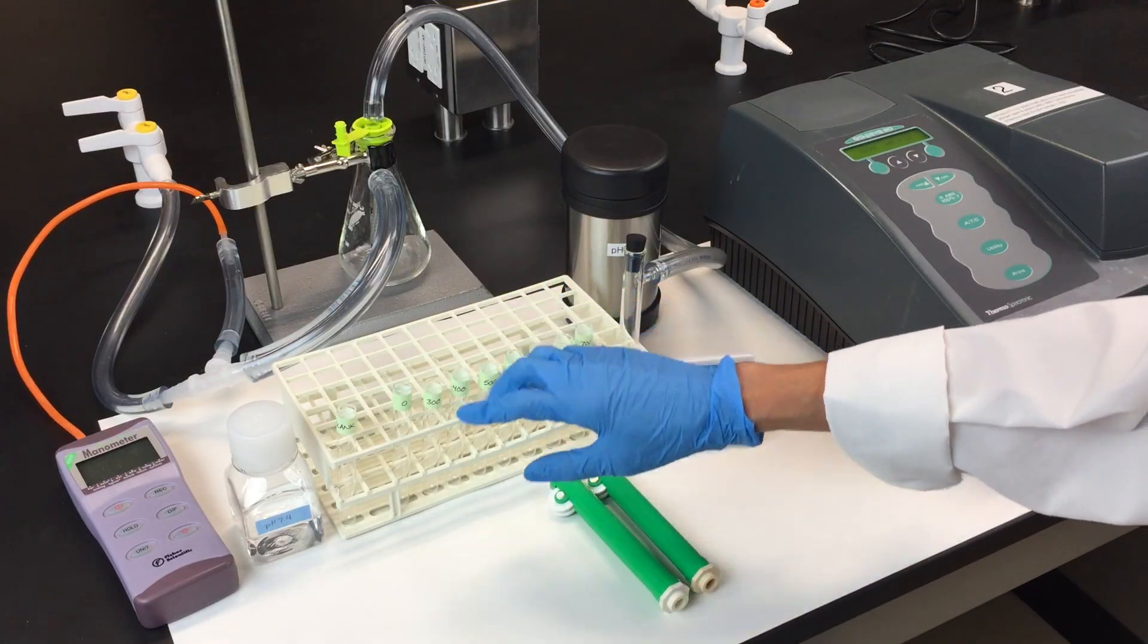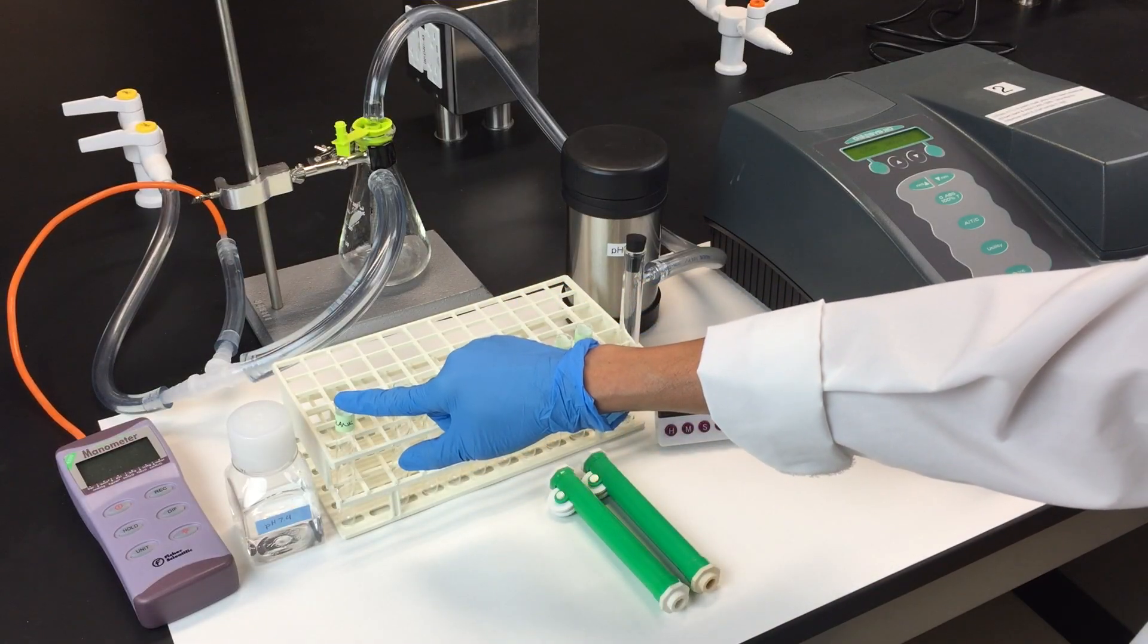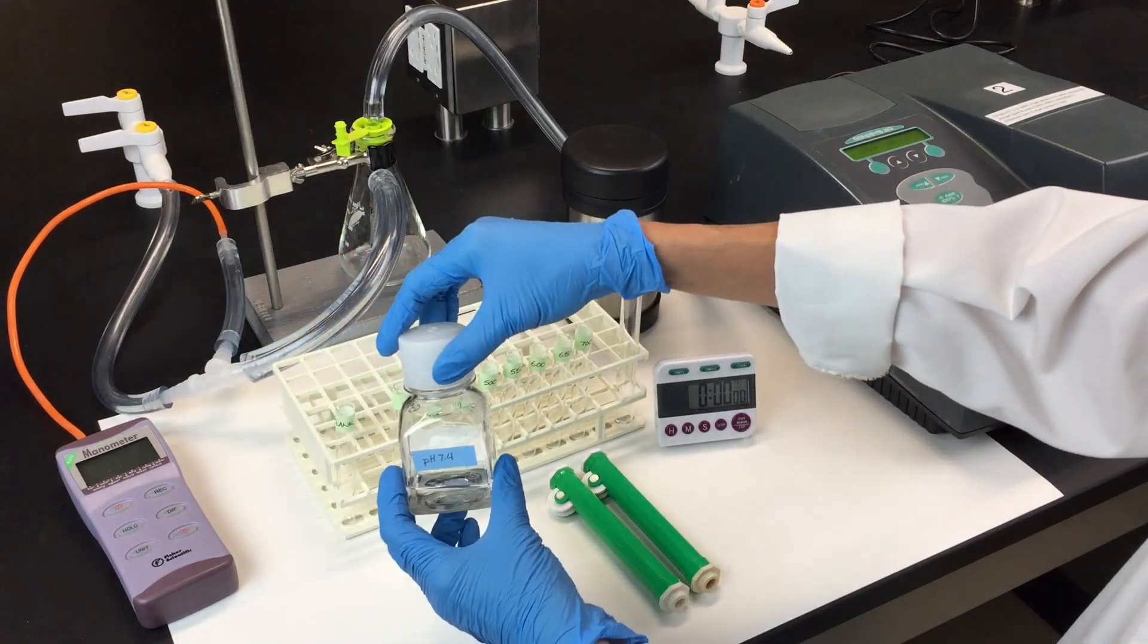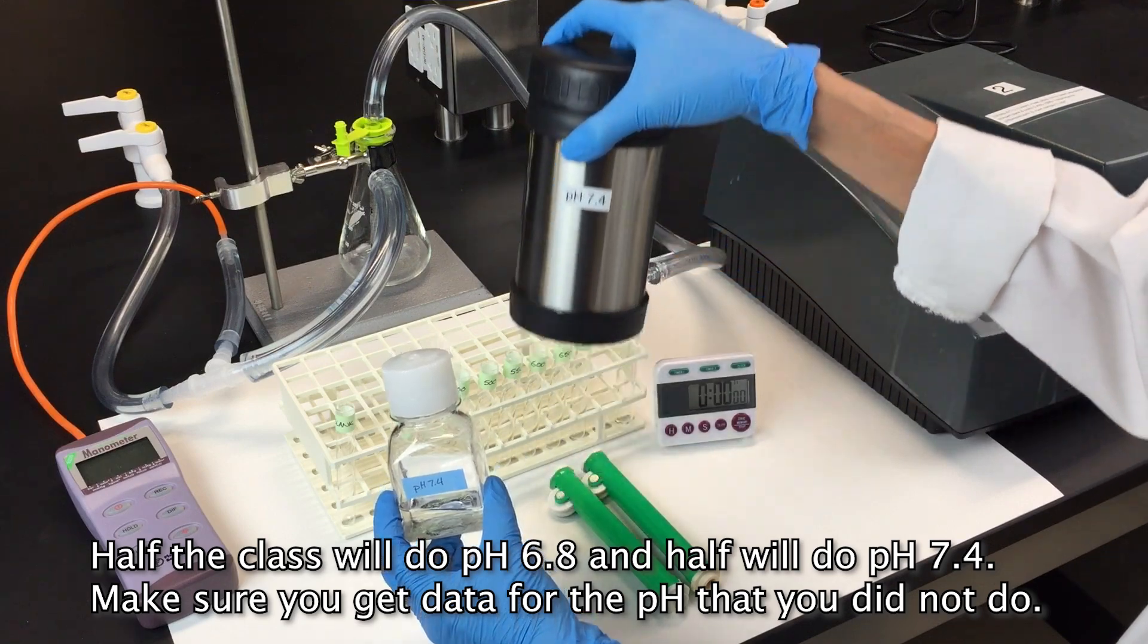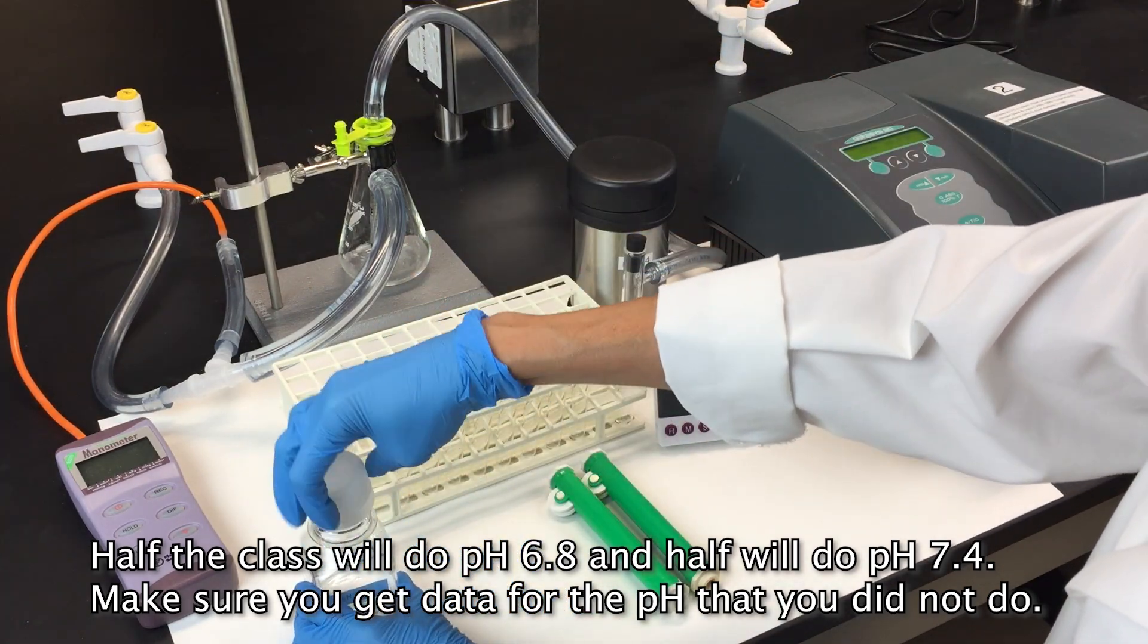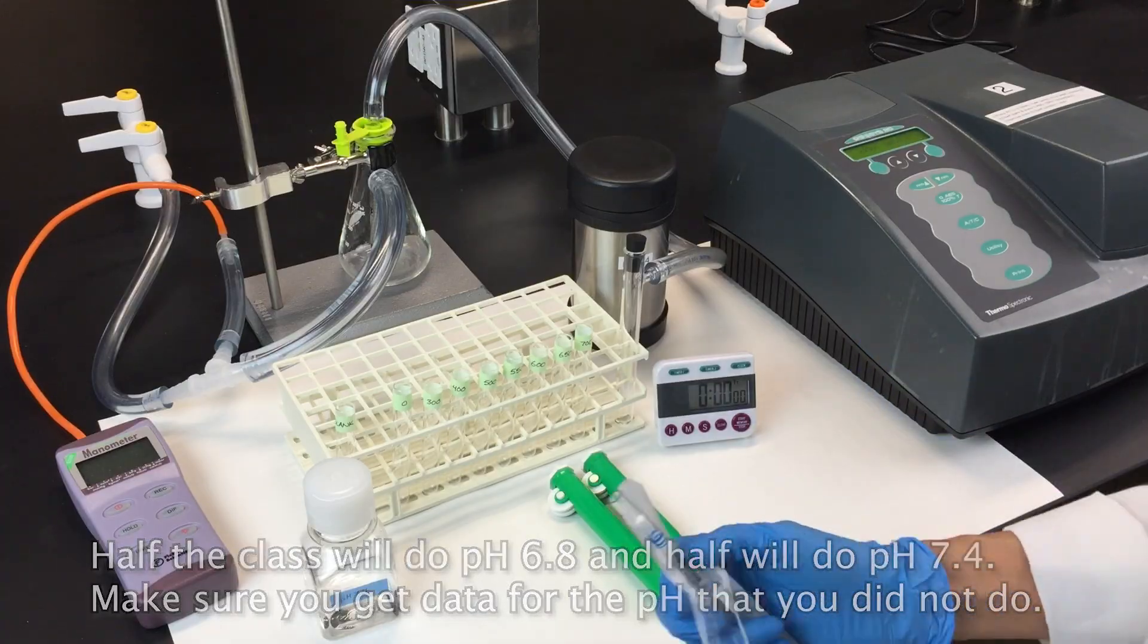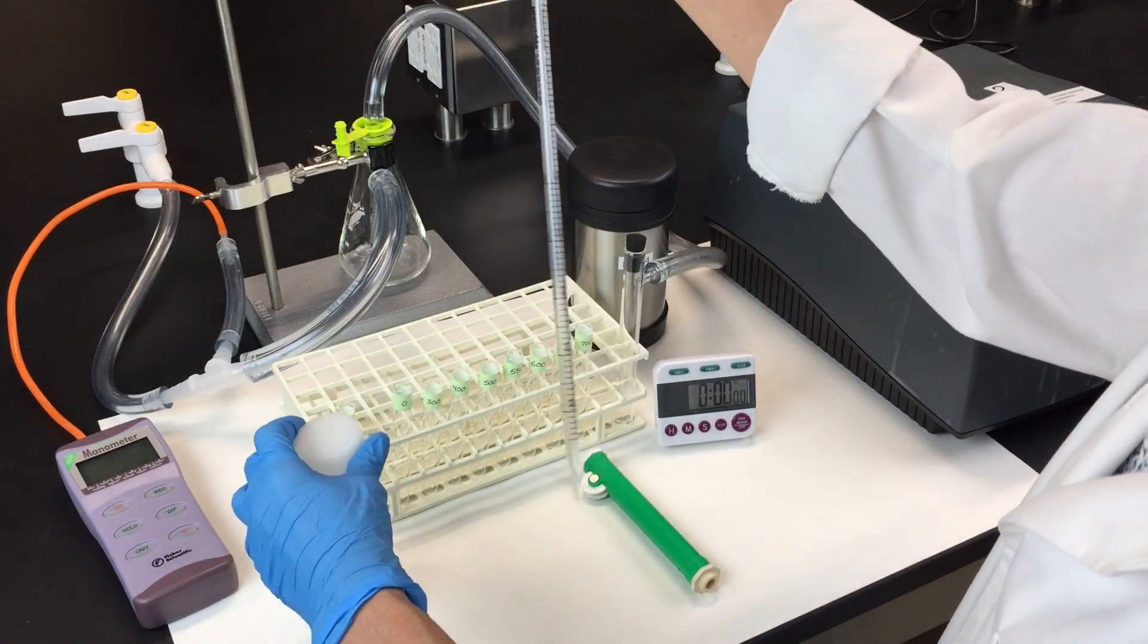Label a series of test tubes for the vacuum pressures you'll be testing and one tube for the blank. For the blank, you'll be using a buffer pHed at the same pH that was used to produce your hemolysate. For this demonstration, we'll use a buffer pHed at 7.4. Transfer 2.5 milliliters of buffer into the blank tube.